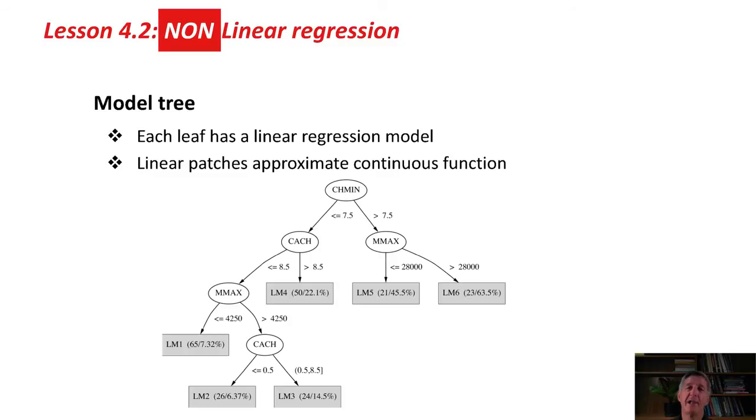I'm actually going to look at nonlinear regression here. A model tree is a tree where each leaf has one of these linear regression models. We create a tree like this, and then at each leaf we have a linear model with those coefficients. It's kind of like a patchwork of linear models. This set of, in this case, six linear patches approximate a continuous function.